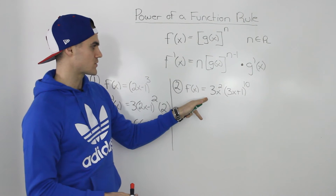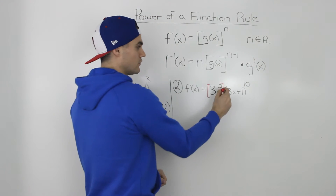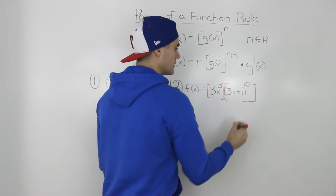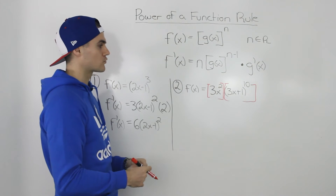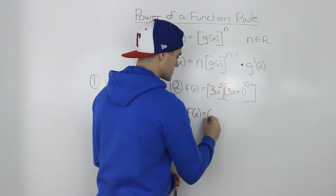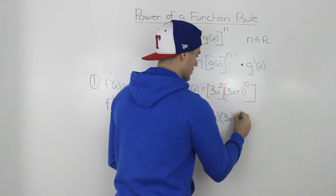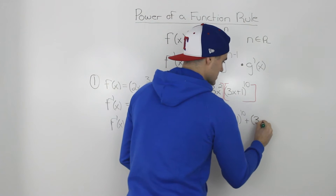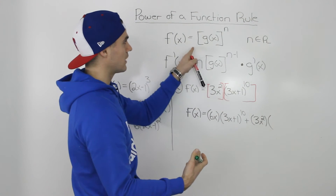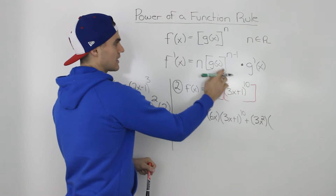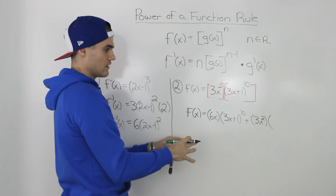Let's say we have f(x) = 3x² · (3x + 1)^10. Notice how this function is the product of two separate functions: 3x² is one function, and (3x + 1)^10 is another function. So to find the derivative, because this is two functions multiplied by each other, we apply the product rule. Applying the product rule, we take the derivative of the first function — that's just 6x — times the second function (3x + 1)^10 left as is, plus the first function 3x² left as is. Now we take the derivative of the second function, and we have to apply the power of a function rule because (3x + 1)^10 takes this same format where g(x) is 3x + 1 and n is 10. So we're applying the power of a function rule within the product rule.